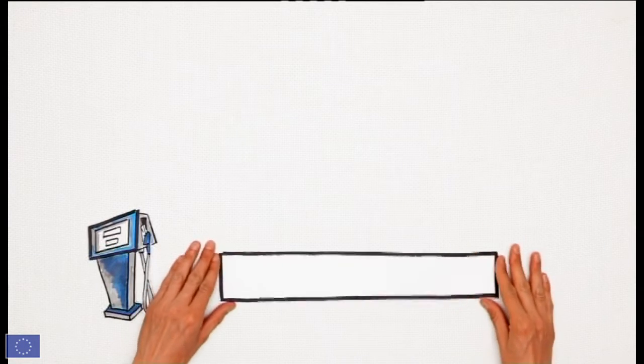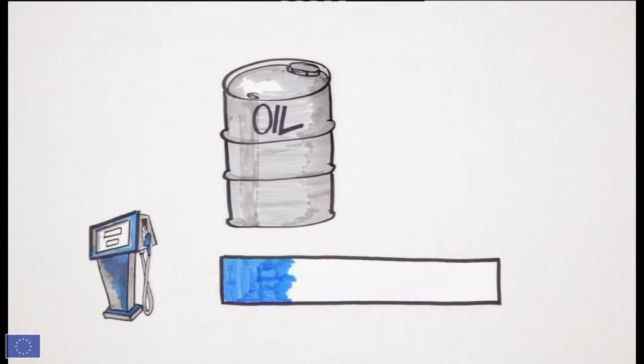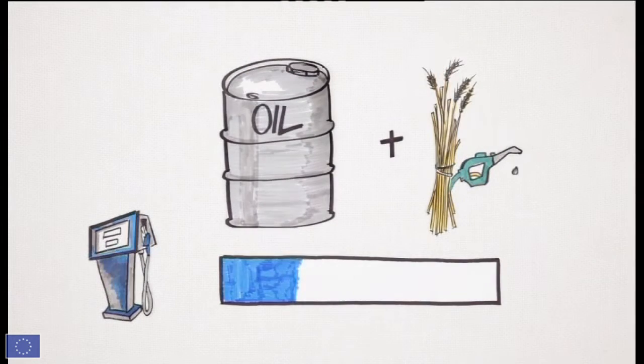What makes up the price of a litre of petrol? The price of the crude oil accounts for 30%, including a small amount for the biofuels added to the petrol.